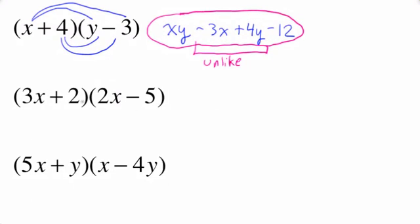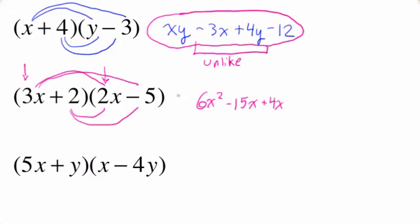Now, how about if we have coefficients? We haven't had any coefficients in front of the first term, but you just follow the rules. What's F? 3X times 2X, which is 6X squared. Outside, 3X times negative 5, that's negative 15X. Inside, 2 times 2X is a positive 4X. And then the last term, 2 times negative 5 is a negative 10.